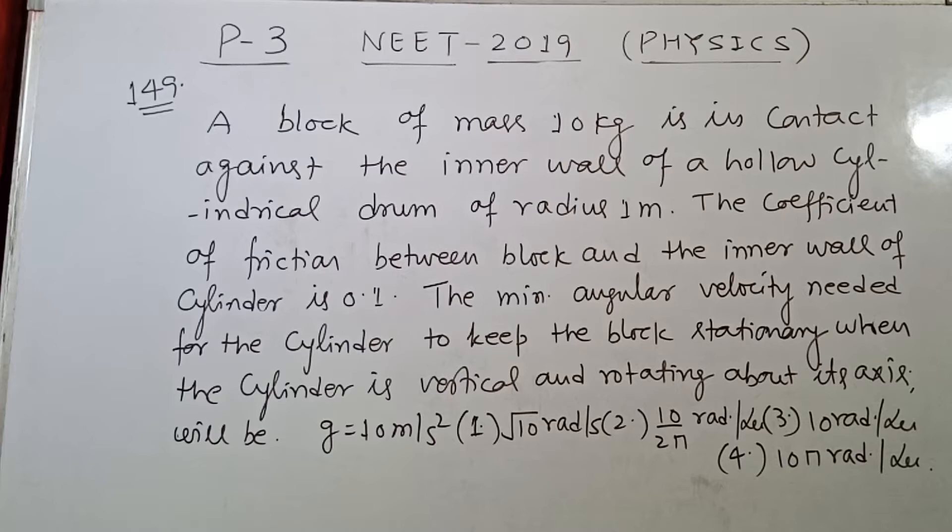The coefficient of friction between block and the inner wall of the cylinder is 0.1. The minimum angular velocity needed for the cylinder to keep the block stationary when the cylinder is vertical and rotating about its axis will be.